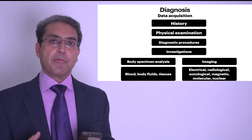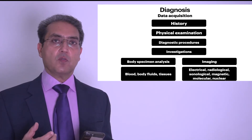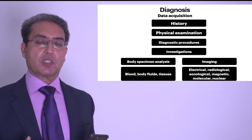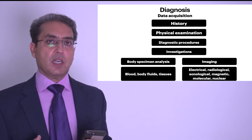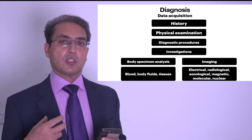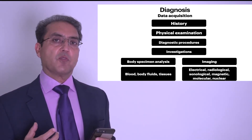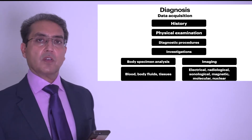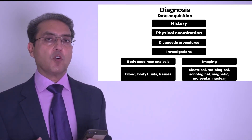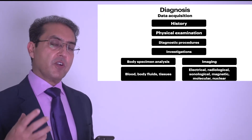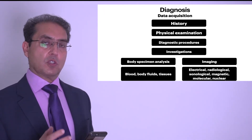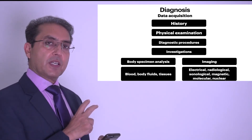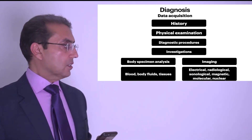Magnetic resonance imaging allows visualization of various body structures. Nuclear studies use radionuclide material for imaging the body. In summary, investigations fall into two main categories: body specimen analysis and imaging studies, with functional studies also performed as needed.